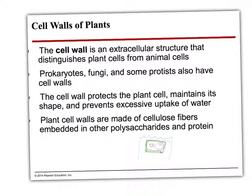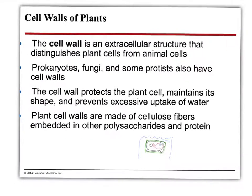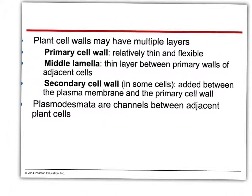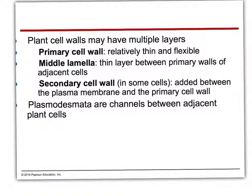Plant cell walls are made up of cellulose with other embedded polysaccharides and protein. Most cell walls have multiple layers: your primary cell wall, which is relatively thin; the middle lamella, which is a thin layer between the primary walls of adjacent cells; and a secondary cell wall in some cells, which is added between the plasma membrane and the primary cell wall.